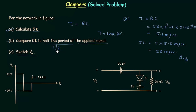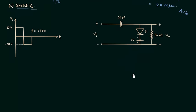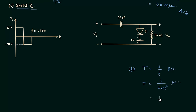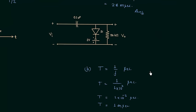Now we will compare 5 tau with T by 2, moving to Part B of the problem. Time period T is equal to 1 by frequency. The frequency is 1 kilohertz, so T equals 1 divided by 1 multiplied by 10 raised to power 3 seconds, which is 1 millisecond. Now we can calculate T by 2: it equals 1 millisecond divided by 2, which is 0.5 milliseconds.